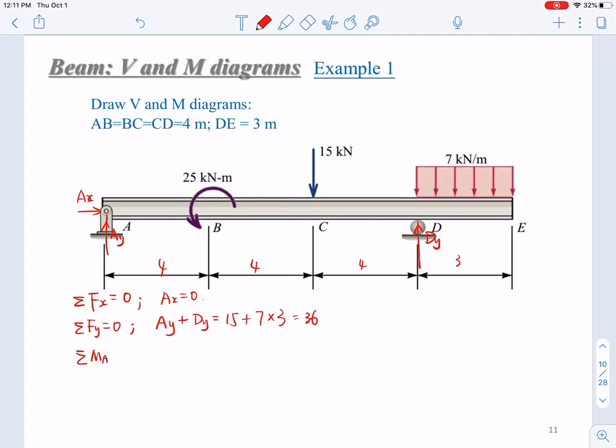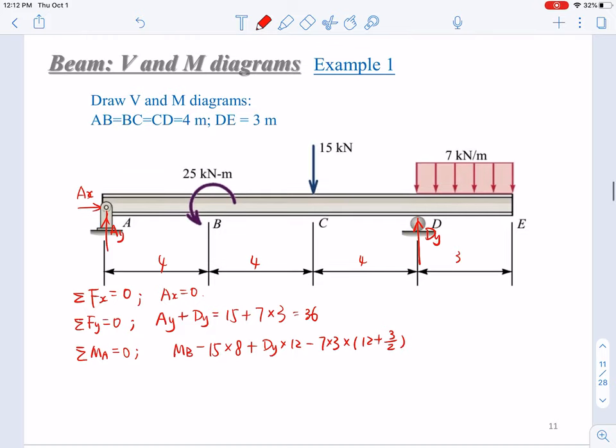We will sum MA equals zero. So from here, we will have MA, you will have MB minus 15 times this arm. This will be AC, like 4 plus 4, it will be 8, then plus Dy times the arm will be 12, then minus 7 times 3 times the arm will be 12 plus 3 over 2. Dy equals zero.